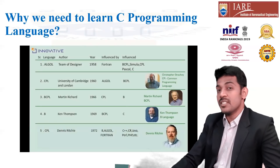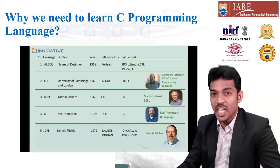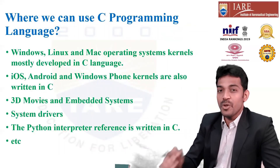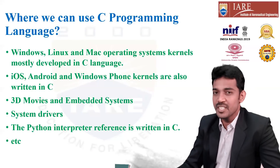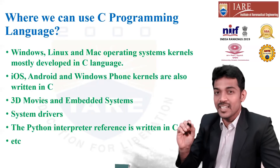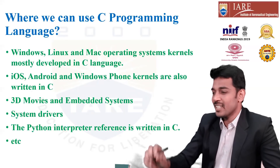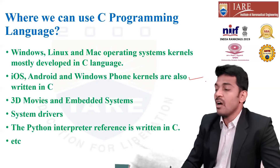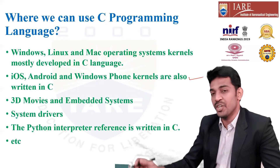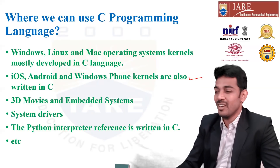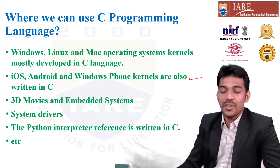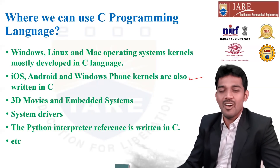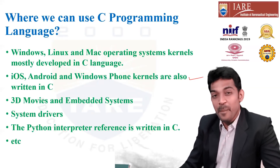Again, you may ask: sir, C was developed in 1972 — are there any real-time applications till now? Yes, we are using C in so many applications. We are using Windows, Linux, or Mac — any operating system kernels are developed in C programming language. The next thing is mobile phones — operating systems like iOS, Android, or Windows are developed in C programming language. And 3D movies, embedded systems — you may observe so many embedded systems in your homes like microwaves or alarms everywhere. All embedded systems are written in embedded C, C programming language.